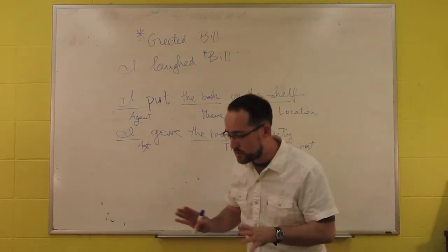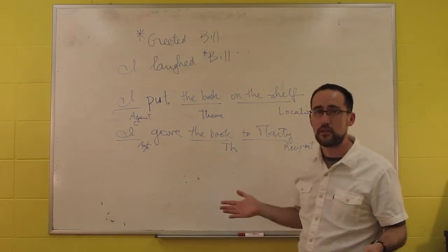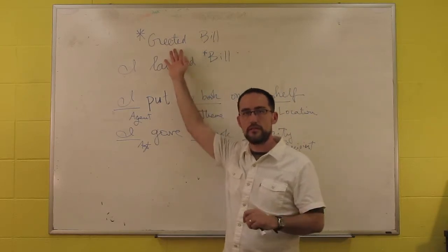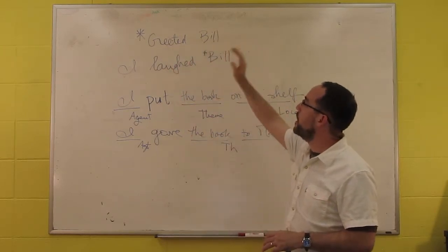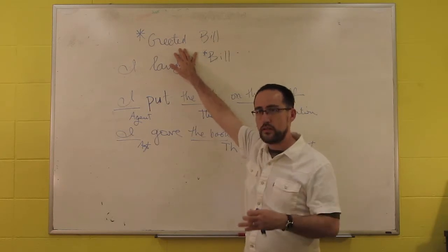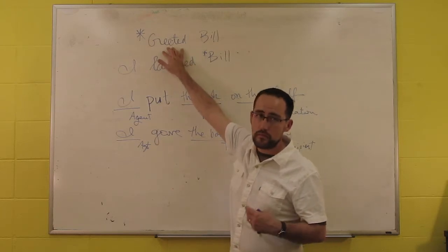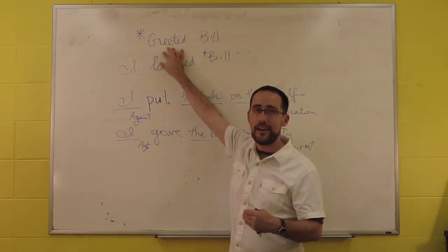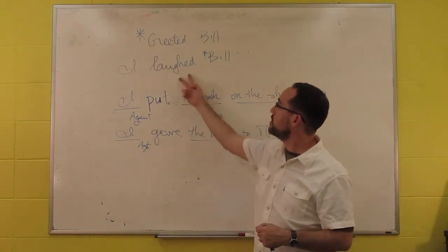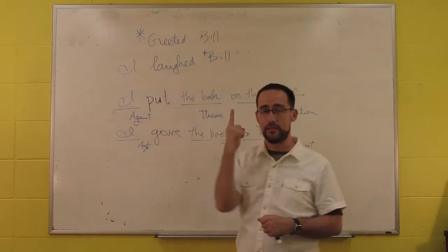And one of the classic rules of thematic roles is what's called the theta criterion, by which these thematic roles, or theta roles as they're called sometimes, the thematic role is assigned in a particular way. So the theta criterion requires that every theta role gets assigned and that only one DP can have it. So here, laughed only has one laugher, because it's only got one thematic role.